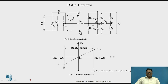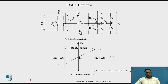The frequency response is the same as the Foster-Seeley. The useful range lies between FC minus ΔF and FC plus ΔF, where FC is the carrier frequency and ΔF is the frequency deviation. This frequency deviation can be found using the modulation index.